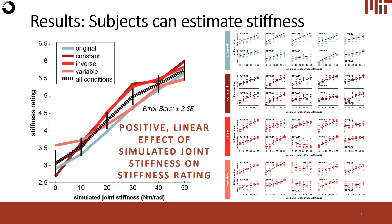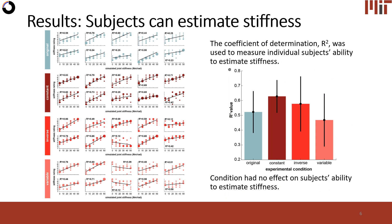What we found was pretty remarkable. Despite manipulations to the velocity profile, subjects could positively correlate their stiffness ratings with the simulated joint stiffnesses. This is shown on the left by the positive linear effect of simulated joint stiffness on stiffness rating. On the right, we see the individual subject data where a linear model was fit to each subject's data, and the coefficient of determination was used as a measure of subjects' ability to estimate stiffness. We found that condition — that is, velocity profile — had no effect on subjects' ability to estimate stiffness.